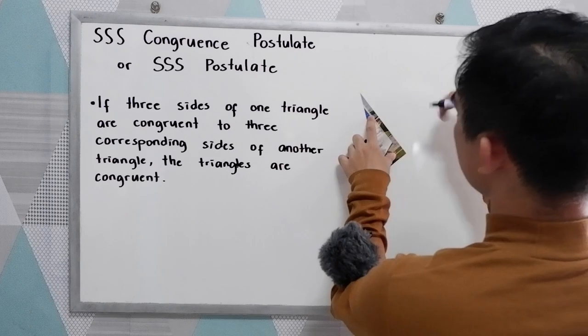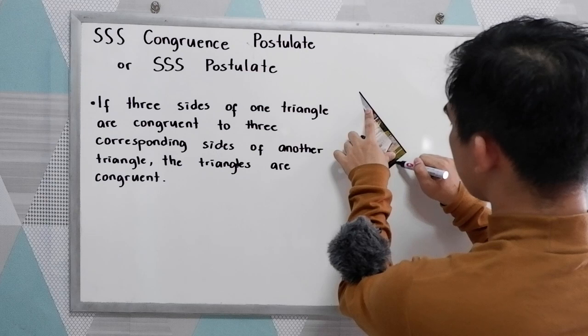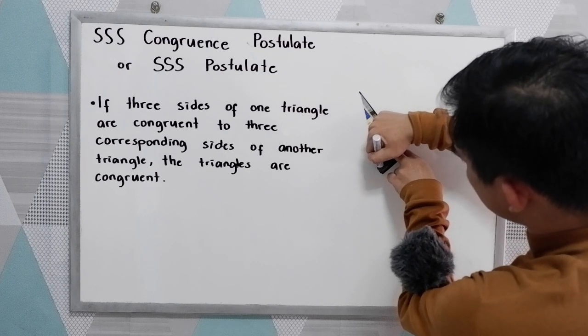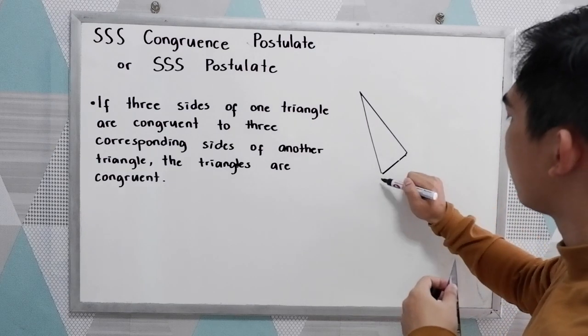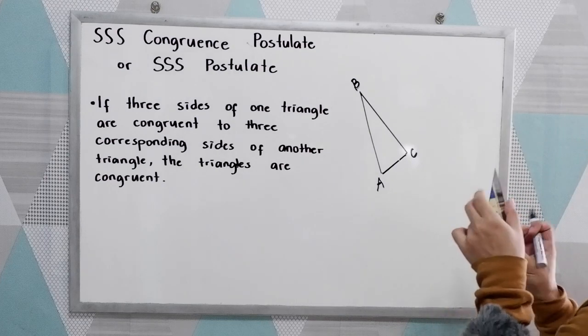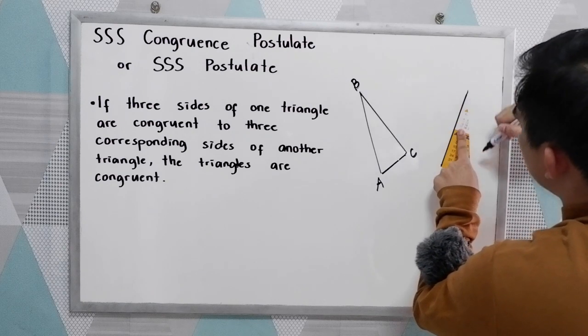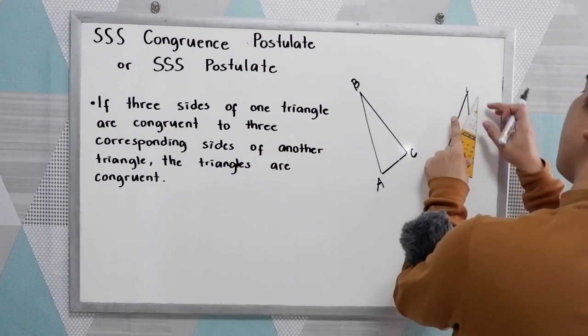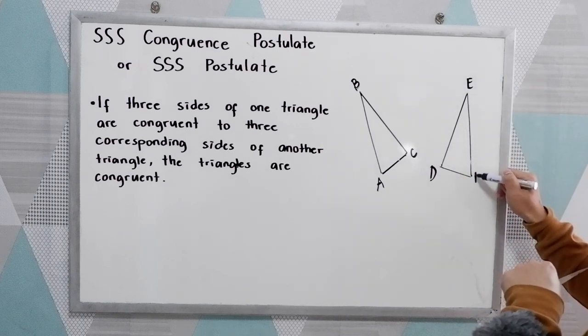So let's say we have our triangles. Let's say we have this triangle. We're going to name it as triangle ABC and let's draw another triangle. Then I will name it DEF.